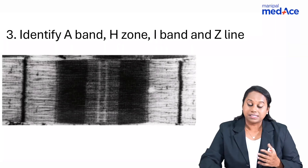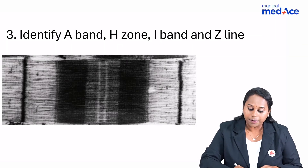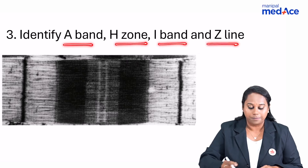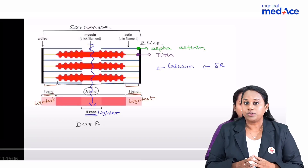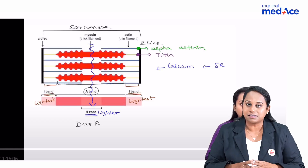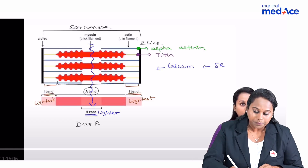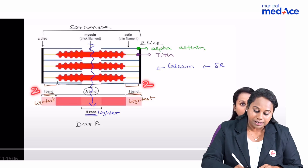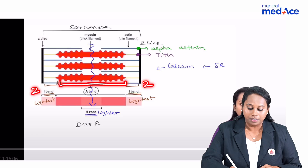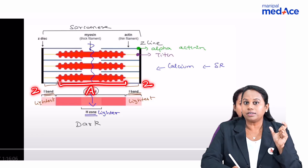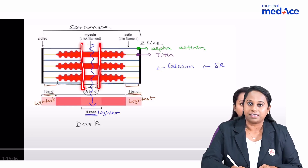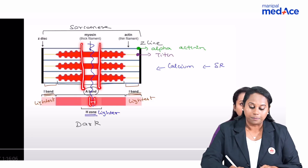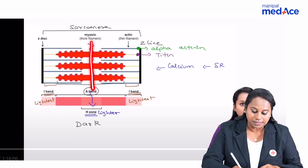Question number 3 was about the structure of a sarcomere — identifying the A band, H zone, I band, and Z line. As you look at the diagram, the black lines are Z lines. In the center, the whole myosin thick filament region is the A band, giving you a dark band. In the center of the A band there is a zone with no overlap of actin, which is comparatively lighter — that is the H zone. In the center of the H zone there is the M line.